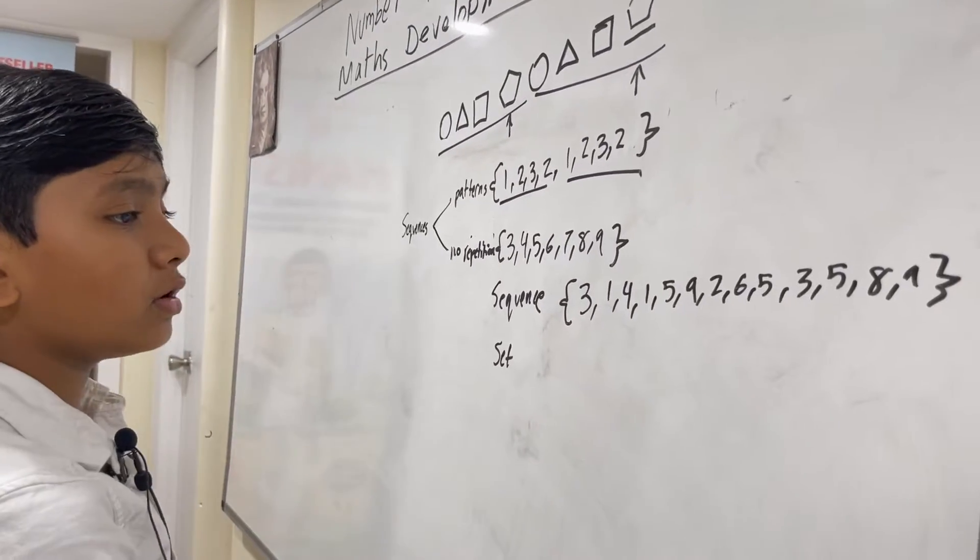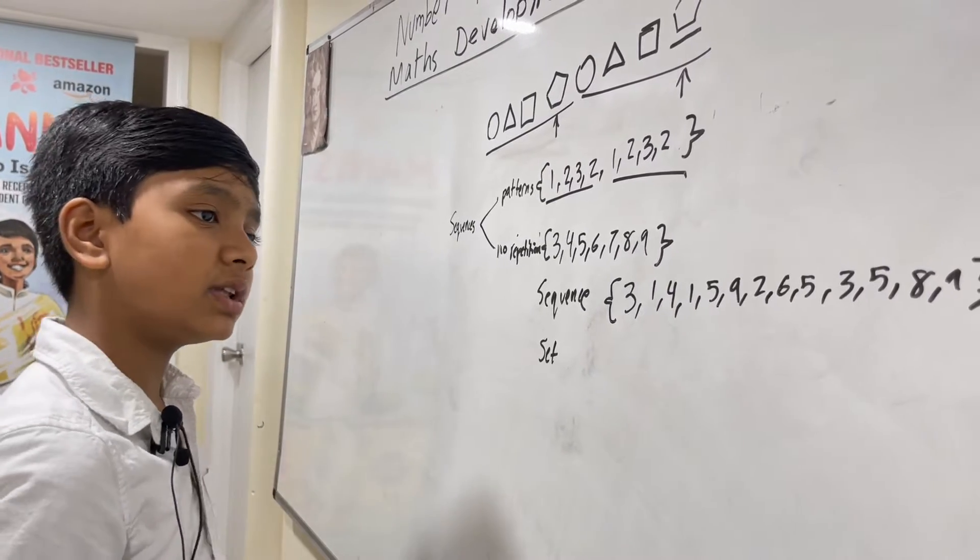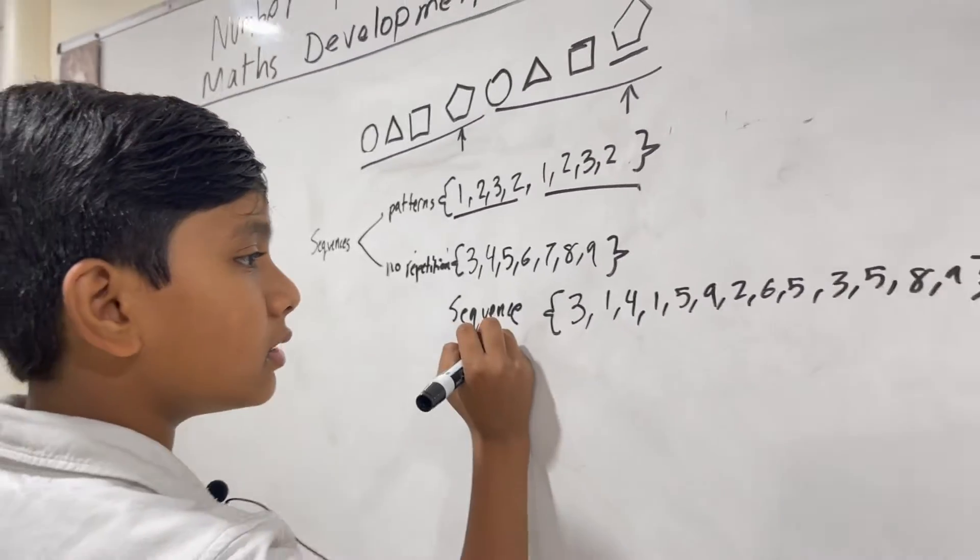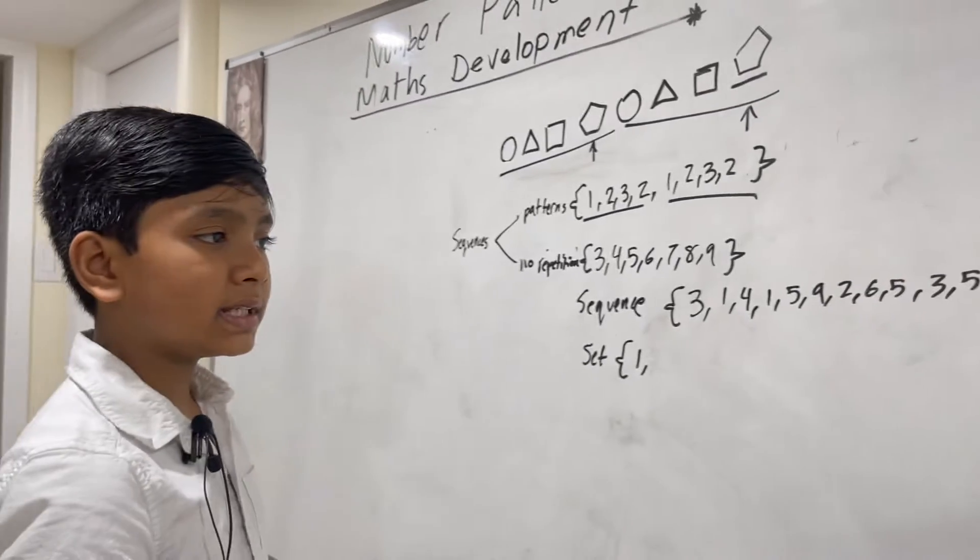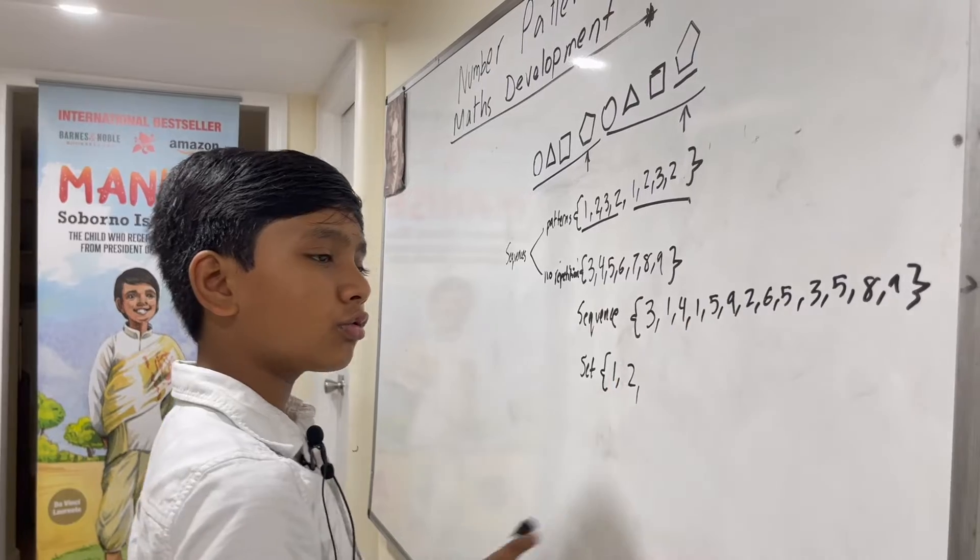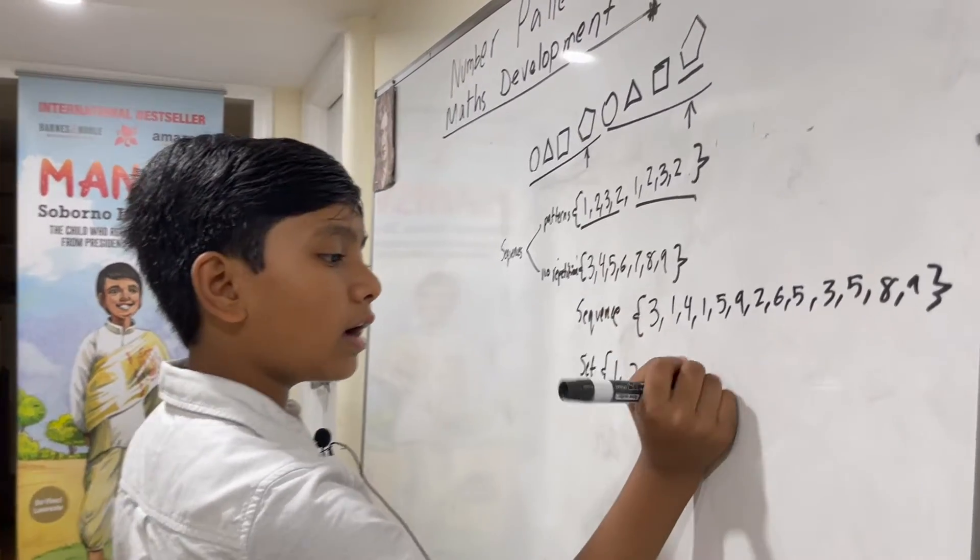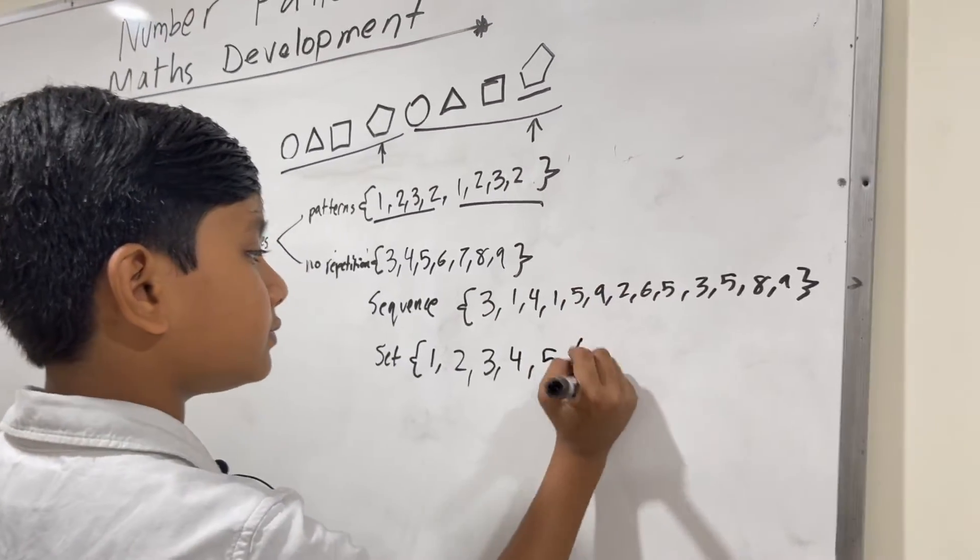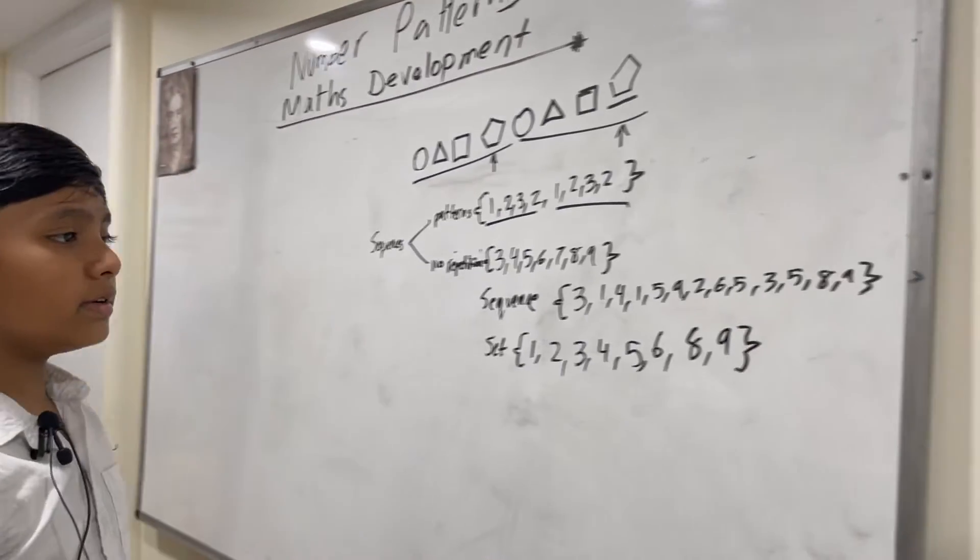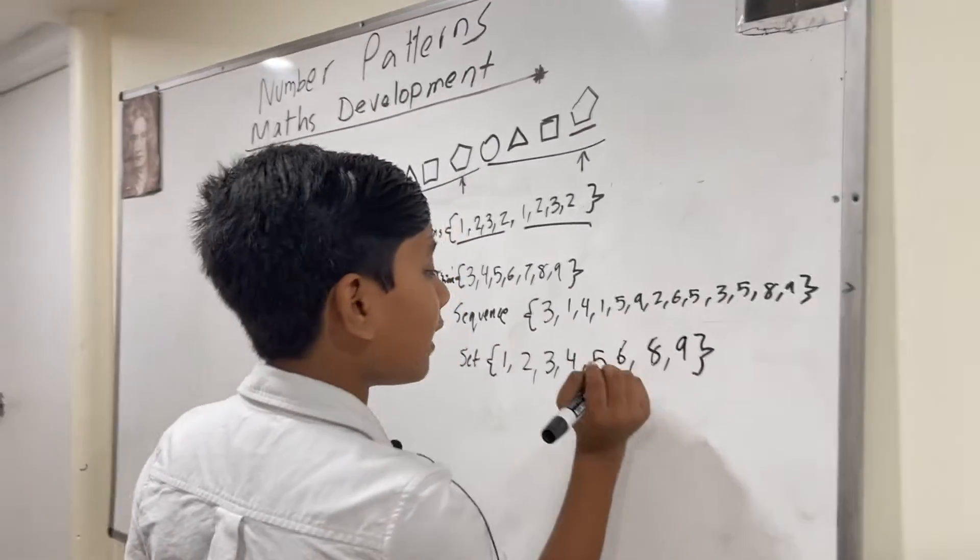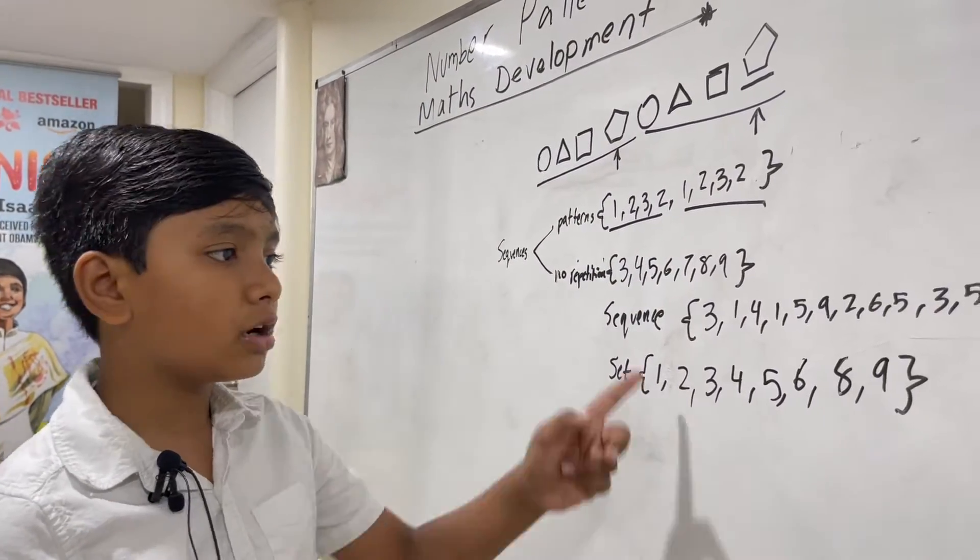And the set, however, does not care for the order of numbers here, and it doesn't care for how many numbers there are either. It only cares for what numbers there are. Even though this sequence is completely disorganized, we have it organized in this set here. And this set showcases every single number that will be on display here.